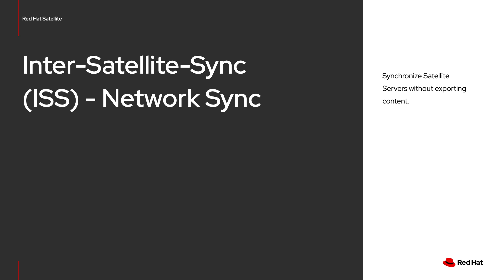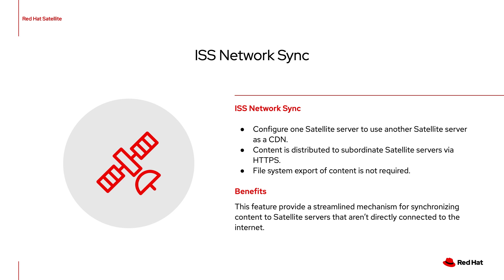Now I'll discuss Satellite synchronization with ISS network sync. Inter-satellite sync is about enabling content synchronization between Satellite servers. Security concerns are probably the most prominent reason — many organizations do not like having satellite infrastructure connected directly to the internet. ISS network sync facilitates a network topology where content is synchronized to a primary Satellite server before secondary Satellite servers synchronize from it. The connections between all servers are over HTTPS, guaranteeing the security of TLS encryption.